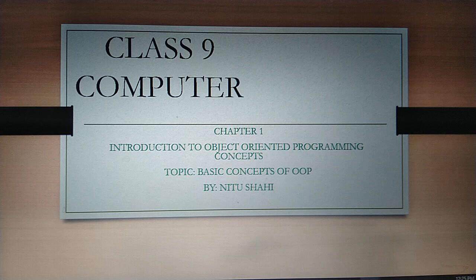Next is class. Class and object, they both are related to each other. Class is a group of objects — but which type of objects? A class is a group of objects which share common properties and relationships. Like, you all are studying in class 9. You all are sharing some common properties because you all have the same syllabus. That's why you are grouped in the same class — class 9.